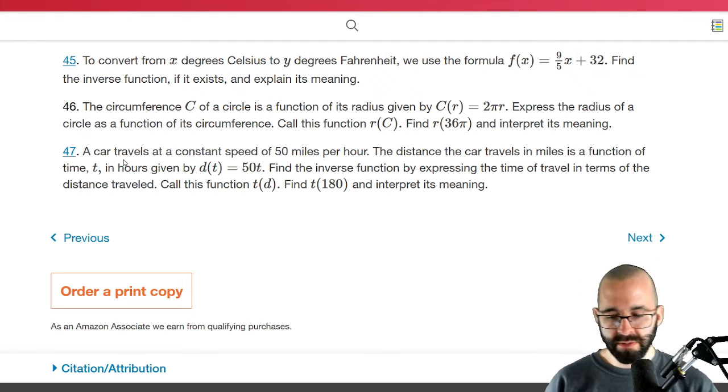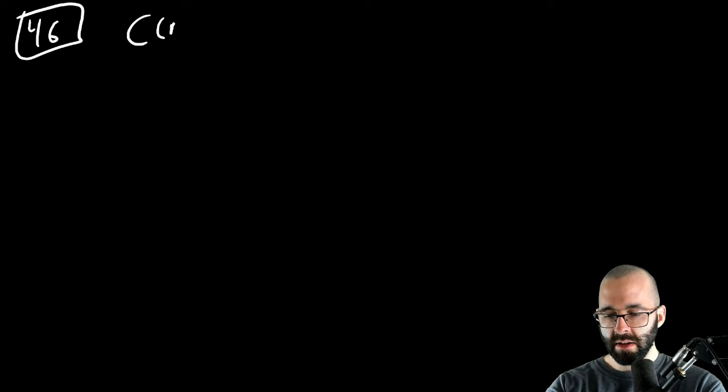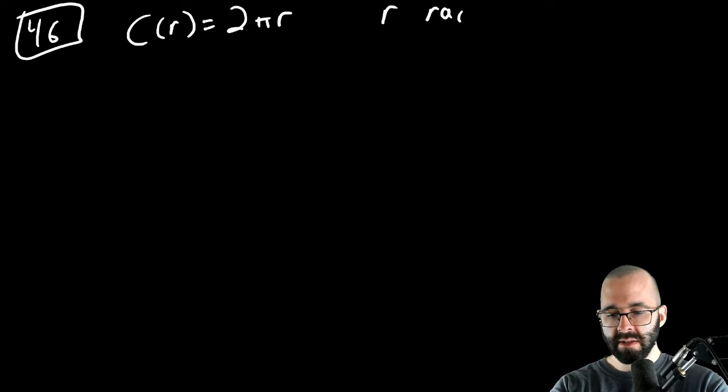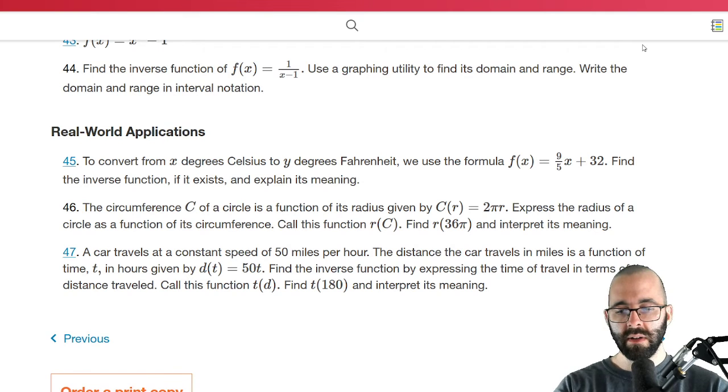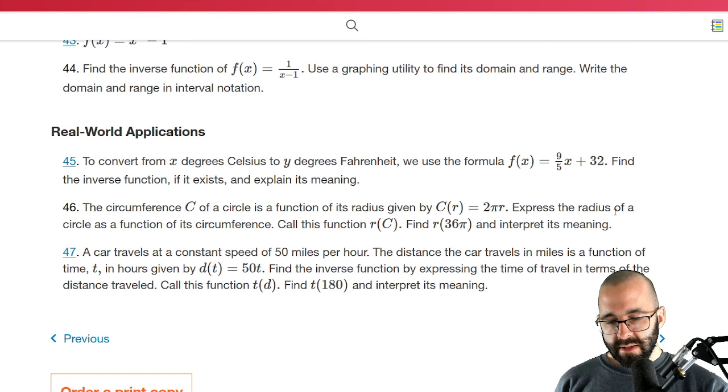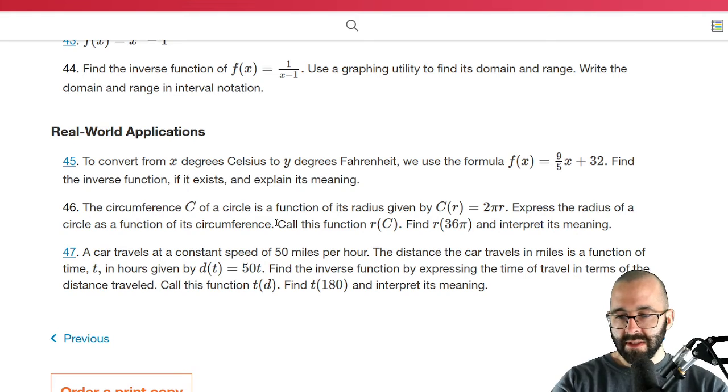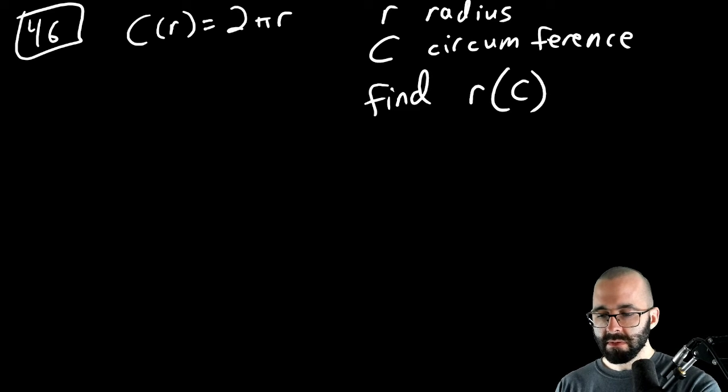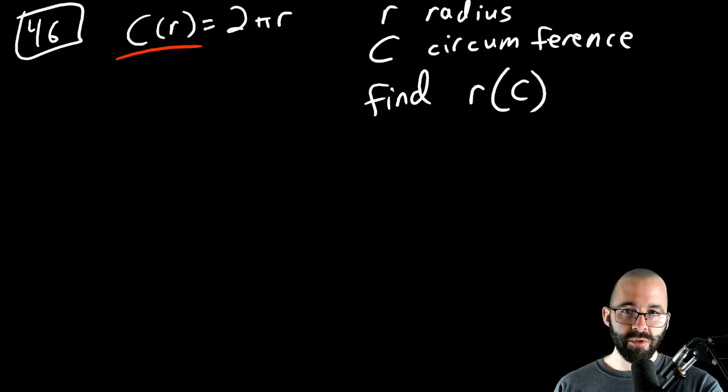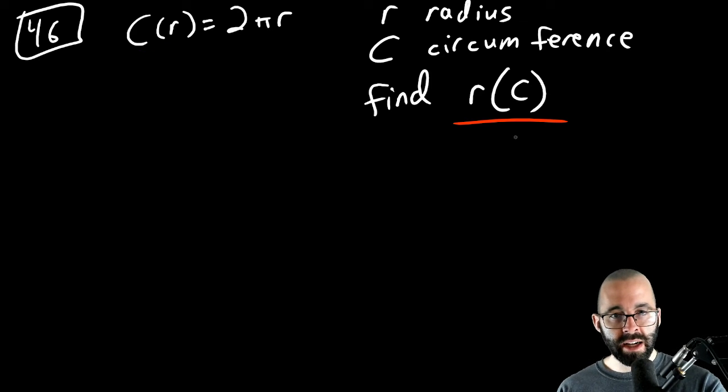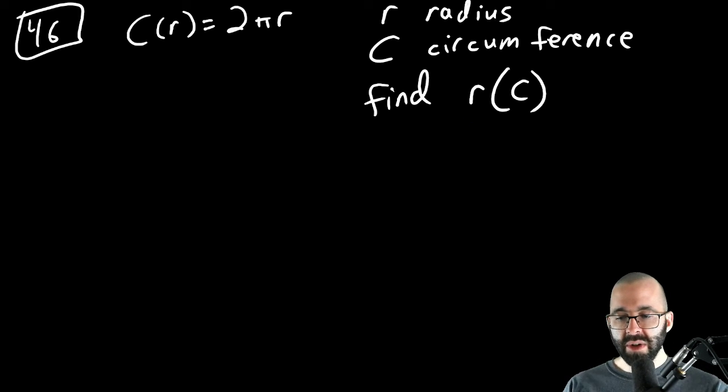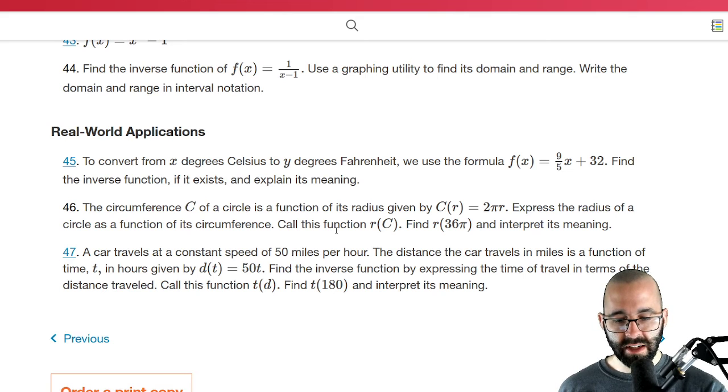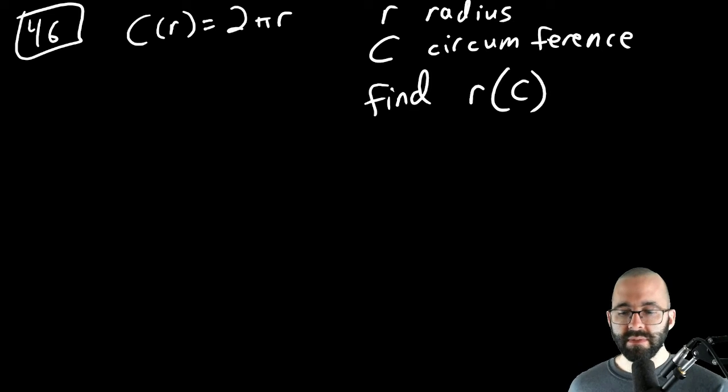Problem number 46. The circumference C of a circle is a function of its radius given by C of R equals 2πr. R is radius, C is circumference. Express the radius of a circle as a function of its circumference. So it wants us to express the radius as a function of its circumference. This is circumference function of radius. This is radius function of circumference. It wants us to find the inverse. Call this function R of C. Let's do that first and then do the second half.